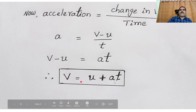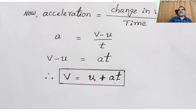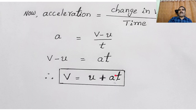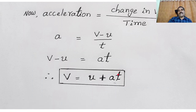The use of this equation: if you know the initial velocity, acceleration, and time taken to travel, then by using this equation you may find out the final velocity after T seconds.